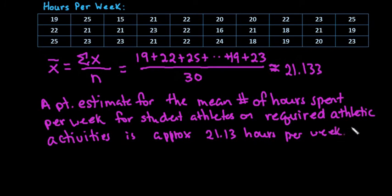So anytime it asks you to interpret or anything like that you would just write a sentence finding this. So we could say on average based on our sample, students spend approximately 21.13 hours per week on required athletic activities.